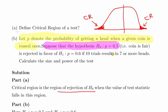Getting a head, that the coin is fair 50-50, is rejected in favor of the alternative hypothesis H1: p equals 0.6 if 10 trials result in 7 or more heads. Calculate the size and the power of the test.